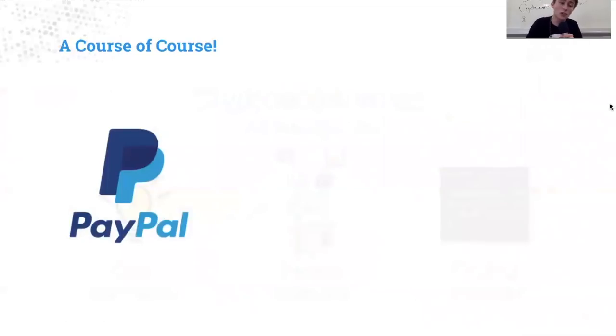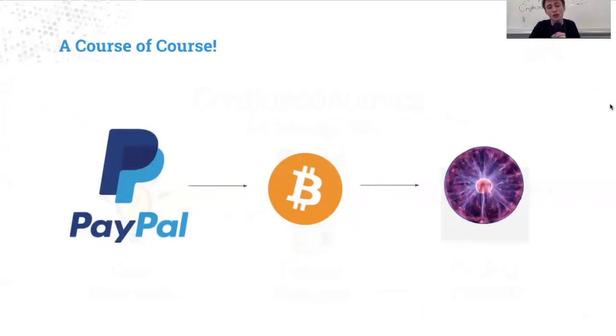The structure of this course will start out with PayPal, a centralized payment processor. And then we will implement Bitcoin, to make it decentralized. And then from Bitcoin, we'll make it even more secure by creating a Plasma chain.